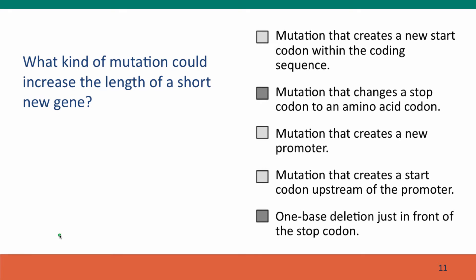The answers are: mutations that change the stop codon of the gene to an amino acid codon are going to make the reading frame longer, because the reading frame is defined by the stop codon that ends it. Also, a deletion in front of the stop codon won't change the sequence of the codon itself, but it will stop it from functioning as a stop codon because it will now be in the wrong reading frame, so it won't be recognized as a stop codon anymore.